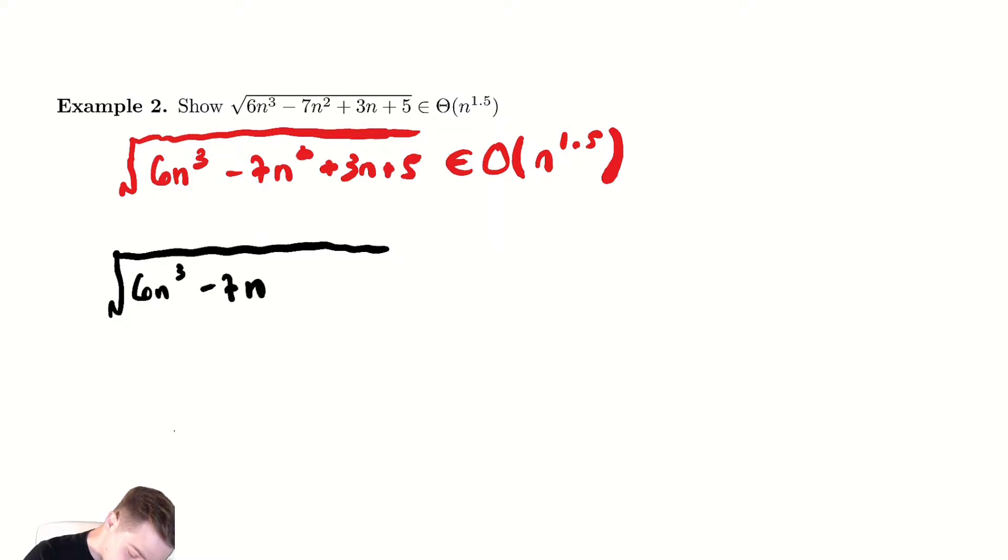6n cubed minus 7n squared plus 3n plus 5 is less than or equal to, we're going to make this bigger and make it look like n cubed in some sense, under the square root that is. How can we do that? Well, we can apply the same tricks for the 3n and the 5 as we did for the previous example.